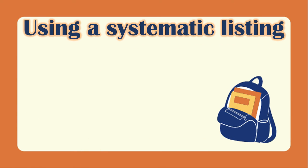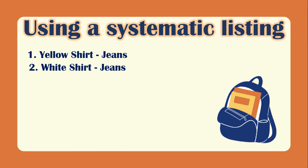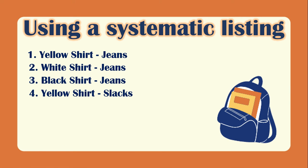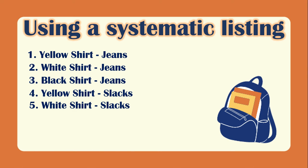For systematic listing, from the word itself we will just list all the possible outcomes: first, yellow shirt and jeans; second, white shirt and jeans; third, black shirt and jeans; fourth, yellow shirt and slacks; fifth, white shirt and slacks; and sixth, black shirt and slacks. Those are the three methods for writing the sample space.